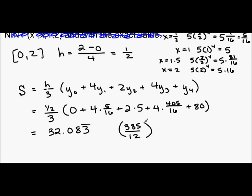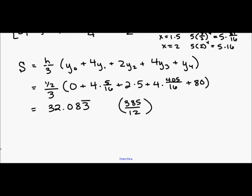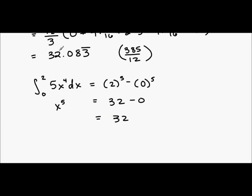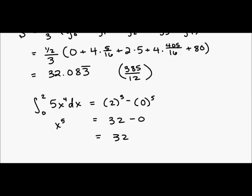If I wanted to compare this to the exact value of the integral, the anti-derivative of this is X to the fifth. So I'm going to evaluate two to the fifth minus zero to the fifth. Two to the fifth is 32 minus zero. We get just 32. So you can see that this is, again, a very, very close approximation. It's much better than the left and right hand Riemann sums. But that is it for 5.5.